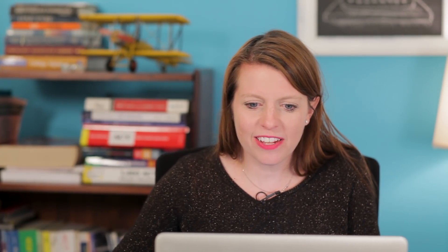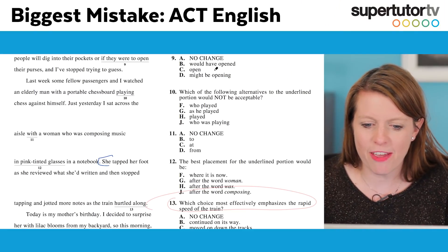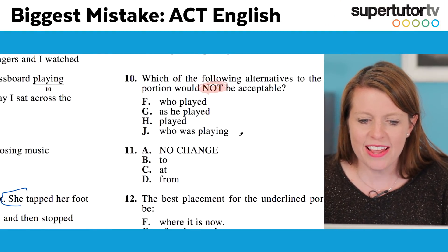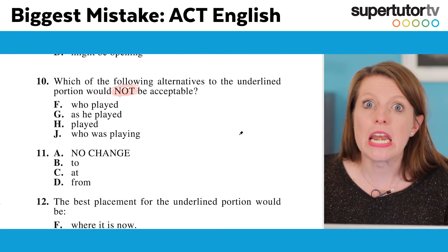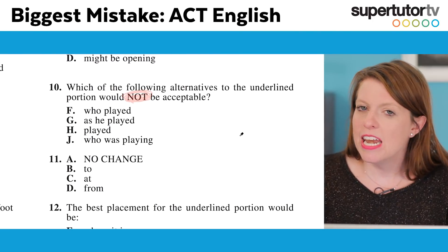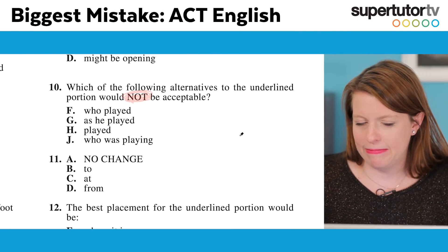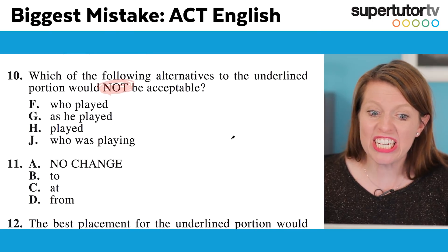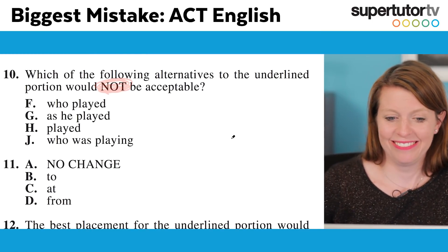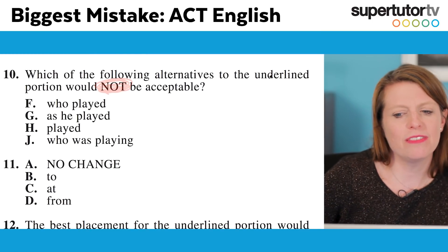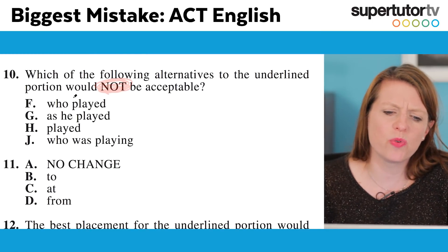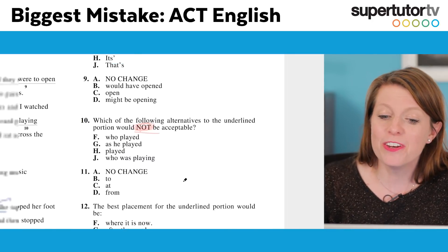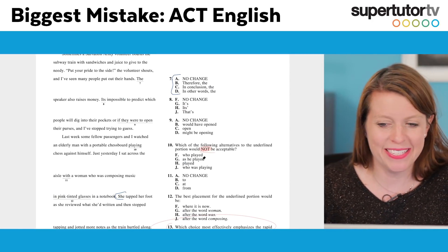And you know why you get the wrong answer? Because a lot of these question stems have a very special word in them — and that very special word is the word 'not.' You need to pay attention to 'not' because it completely shifts what is right. 'Which of the following alternatives to the underlined portion would not be acceptable?' That is totally different from choosing the best answer — it's the opposite.